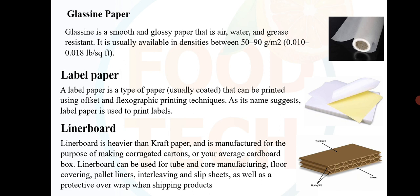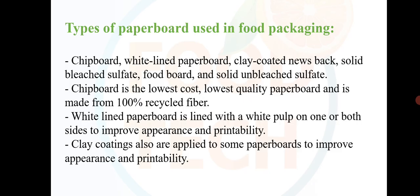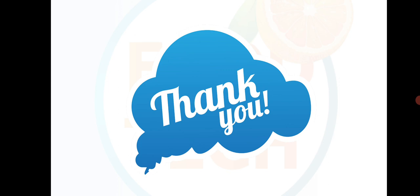Liner board is also used as a protective overwrap when shipping products. Types of paperboard used in food packaging include: chipboard, white line paperboard, clay-coated newsback, solid bleached sulfate, food board and solid unbleached sulfate. Chipboard is the lowest cost and lowest quality paperboard, made from 100% recycled fiber. White line paperboard is lined with white pulp on one or both sides to improve appearance and printability. Clay coatings are also applied to some paperboards to improve appearance and printability.